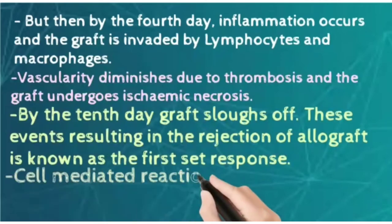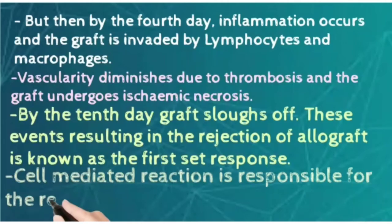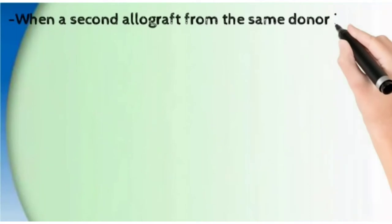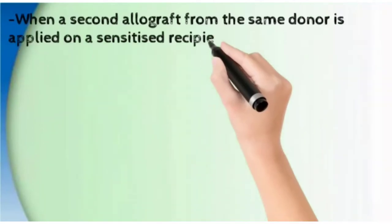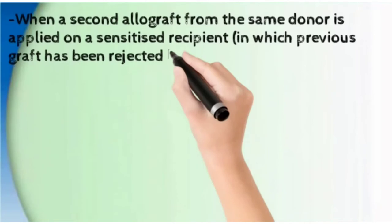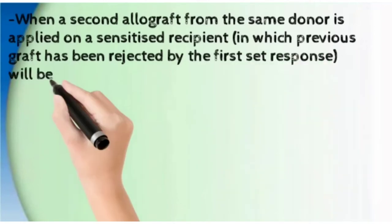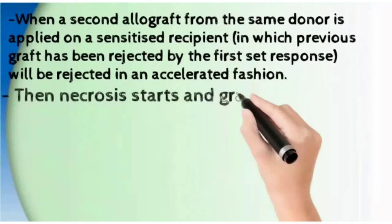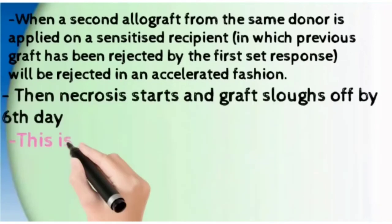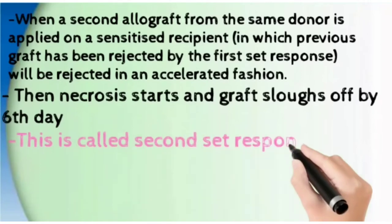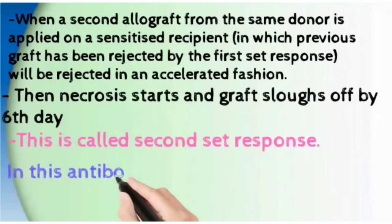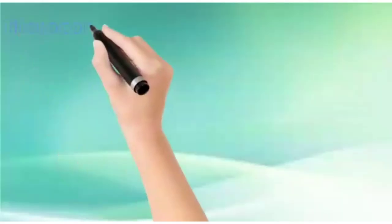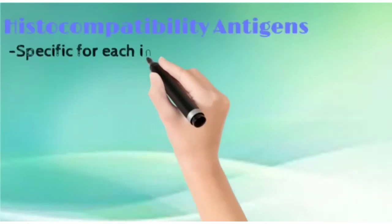When a second allograft from the same donor is applied on a sensitized recipient — one in which the previous graft has been rejected by the first set response — it will be rejected again in an accelerated fashion. Necrosis starts and the graft sloughs off by the sixth day. This is the second set response, in which antibodies play an important role along with cell-mediated immunity.